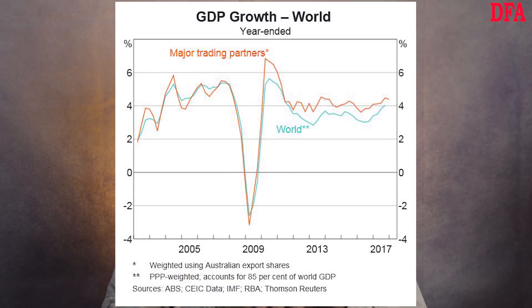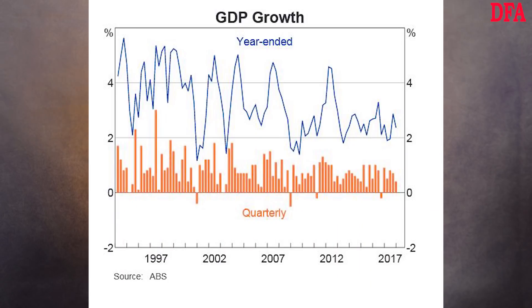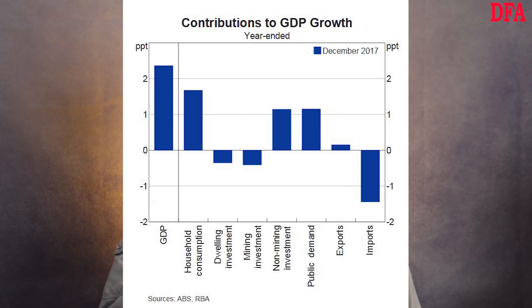Now to GDP. World GDP growth is sitting at around four percent based on purchasing power weighted figures of around 85 percent of world GDP. We could have a separate discussion about whether GDP is a good or adequate measure of growth, but in short, whilst it might work for a manufacturing-based economy it really does not do the job in more advanced and globalized economies, at least in my view. In comparison, Australian GDP looks pretty poor and fell towards two percent in the last quarter. Looking at the contributions to GDP growth, household consumption made the strongest contribution, with non-mining investment and public demand also helping, but dwelling investment and mining investment both fell below zero. Imports also had a negative impact as you'd expect. So the RBA is still over-reliant on the household sector performing, which in my view is a problem.